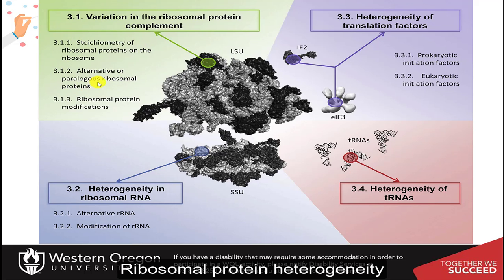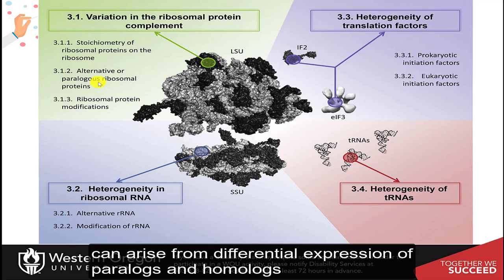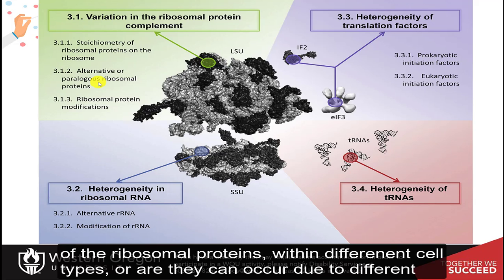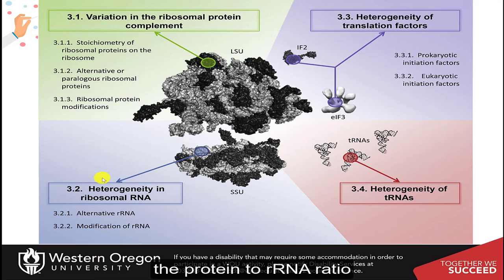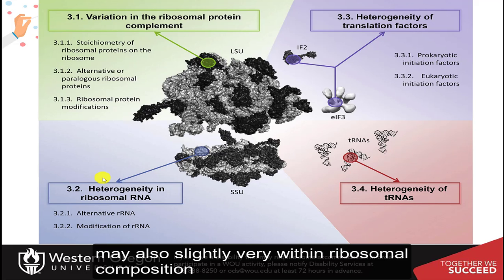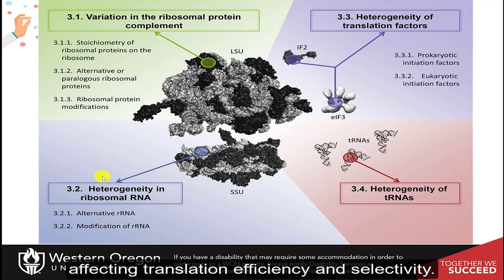In addition, ribosomal protein heterogeneity can arise from differential expression of paralogues and homologues of the ribosomal proteins within different cell types, or that can occur due to different post-translational modifications, such as phosphorylation. The protein to ribosomal RNA ratio may also slightly vary within ribosomal composition, affecting translation efficiency and selectivity.